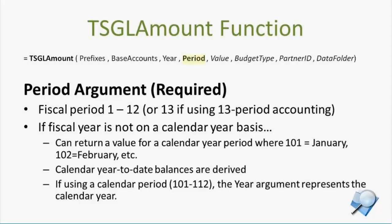An interesting added capability — and this is not in the version on the website right now for download, but you'll expect to see this in the next version released within the next week or two — is the ability to report on a calendar year basis, even if your fiscal ending date is not on a calendar year basis. So if your fiscal ending date is September 30th and you want to still report on a calendar year basis, this would allow you to do that, where period 101 represents January always and 112 represents December always, and it'll properly derive what the balance or activity is based on the calendar year perspective.